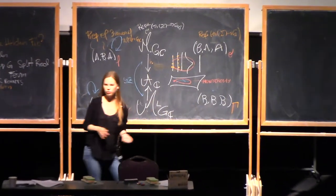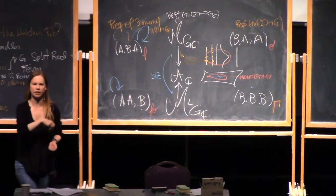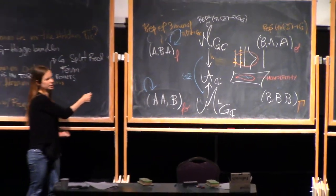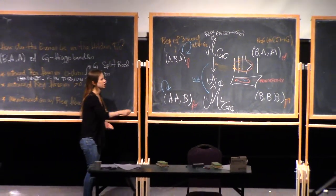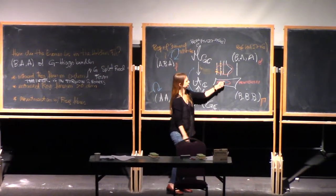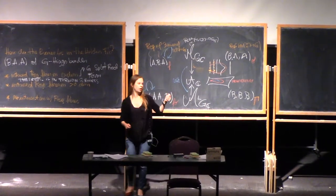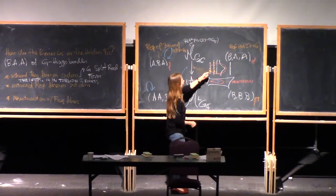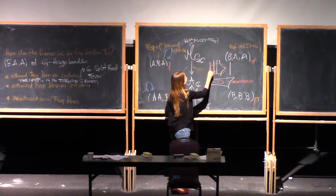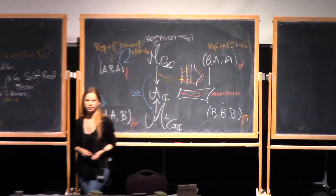We're not going through the singular fiber; we're going around singular fibers. So we're looking at things around the singular fibers here. So in that case, we're looking at how these points in the Hitchin fibration go around.